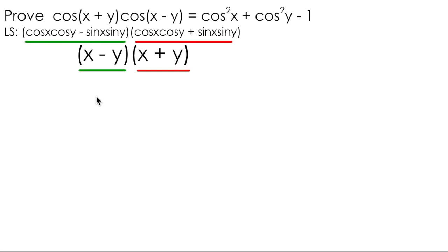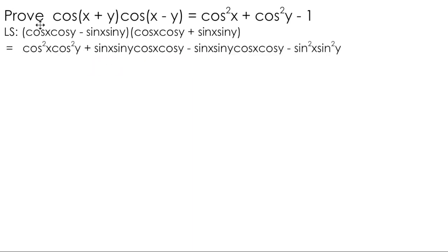But what you really have here is a situation where you could use FOIL to expand and simplify this product of binomials, just like you would with x minus y times x plus y. So when we use FOIL, we have cos x cos y times cos x cos y, also known as cos squared x cos squared y. I've got cos x cos y times sine x sine y, which I'll write as sin x sin y cos x cos y. I've got negative sin x sin y times cos x cos y. And then lastly, I've got negative sin x sin y times sin x sin y, also known as negative sin squared x sin squared y.